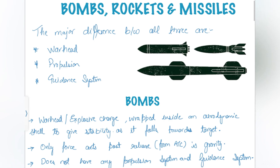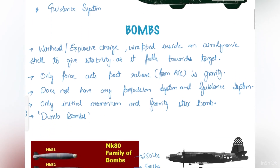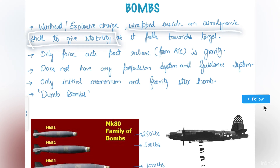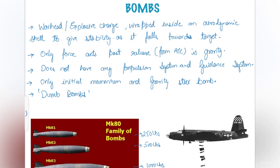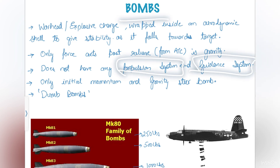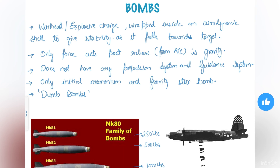I will further discuss each projectile separately. First is the bomb. Bombs are the warhead or explosive charge wrapped inside an aerodynamic shell to give stability. As the bomb falls towards the target, the only force acting post-release from the aircraft is gravity. It does not have a propulsion system or guidance system — only the warhead, initial momentum, and gravity steer the bomb towards the target. That is why they are known as dumb bombs.